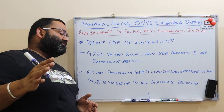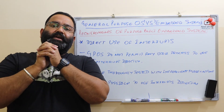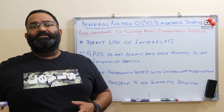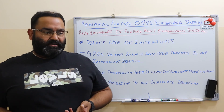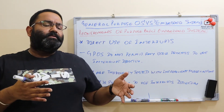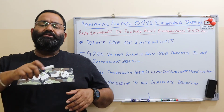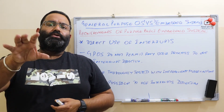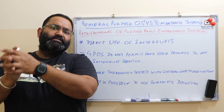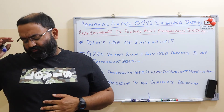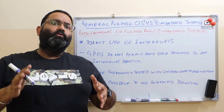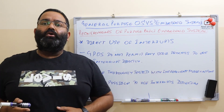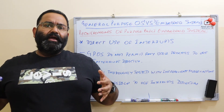In a general purpose operating system, user processes cannot use any interrupt directly. Whereas in an embedded system, user processes can use interrupts directly. For example, in a microwave — one of the classic examples of an embedded system — once you have set the timer and it is running, you can interrupt that operation, cancel it, and reset it at whatever point you want. This is an example of the direct use of interrupts.